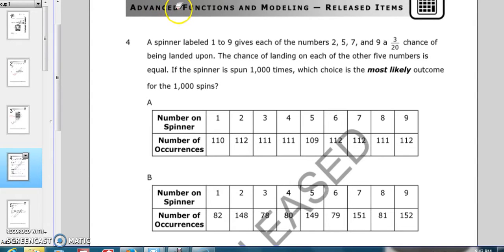North Carolina AFM 2014 released test question number four. We have a spinner labeled 1 to 9 that gives the numbers 2, 5, 7, and 9 a 3 out of 20 chance of being landed upon. The chance of landing on each of the other five numbers is equal. If the spinner is spun 1,000 times, which is the most likely outcome for the 1,000 spins?